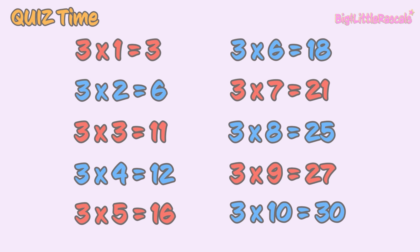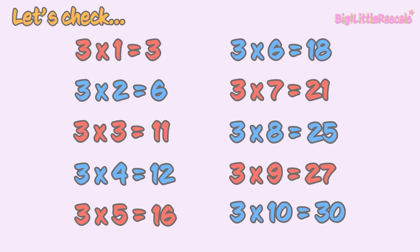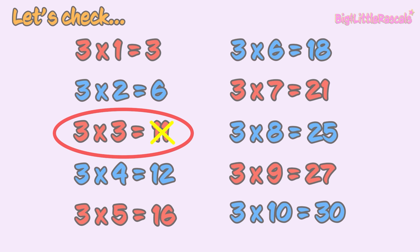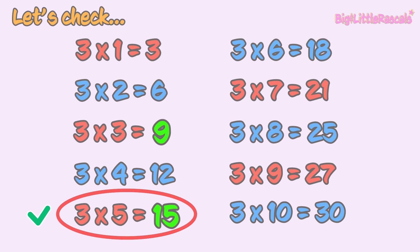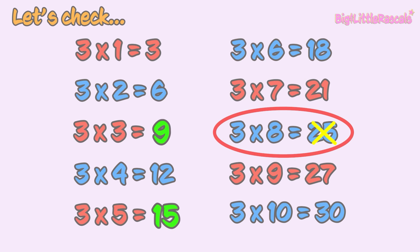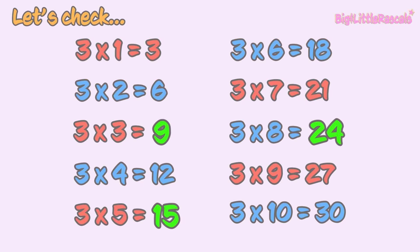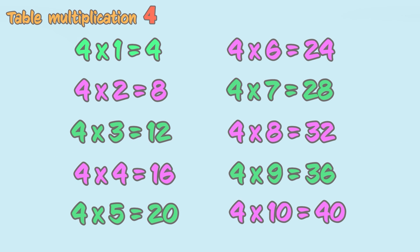Well done! Now let's check the multiplication by 3 table. Can you find the incorrect answers? Let's zoom in closely. The first one is: 3 times 3 equals 9, not 11. Then, 3 times 5 equals 15, not 16. And 3 times 8 equals 24, not 25. So there are 3 incorrect answers in this table.